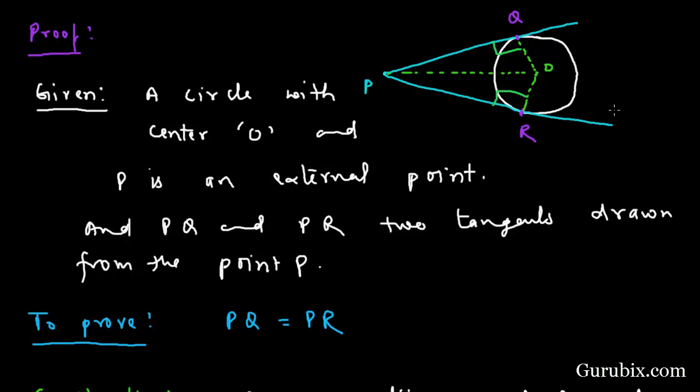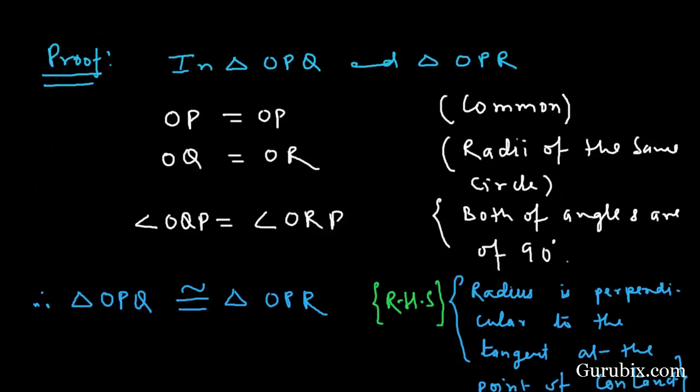Therefore, PQ is equal to PR by CPCT, and the full form of CPCT is Corresponding Parts of Congruent Triangles. This is how we have proved the theorem. Thank you.